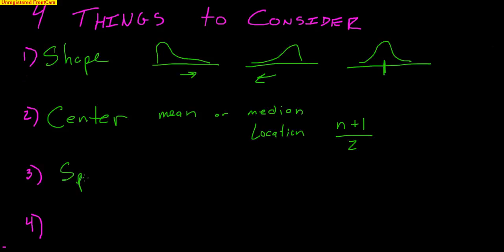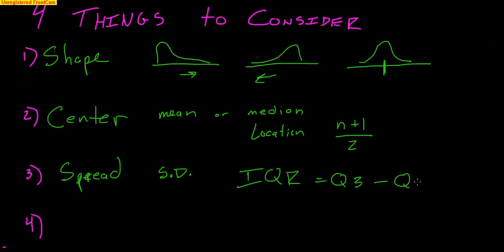Then we want to talk about spread. When we talk about spread, we usually talk about standard deviation — how far a typical value is from the mean. A large standard deviation means your data is very spread out, far from the mean; a small standard deviation means you're very close to the mean. We also use IQR, which is the difference between the third quartile and the first quartile — the middle 50% of your data. When data is symmetric and mound-shaped, use the standard deviation and mean. When data is skewed, use the median and IQR, since those aren't affected by outliers or skewness.